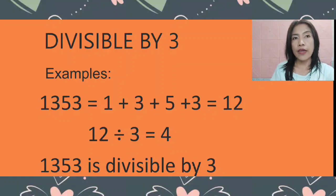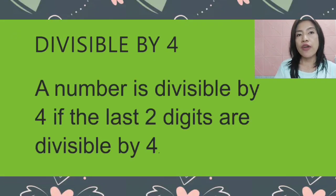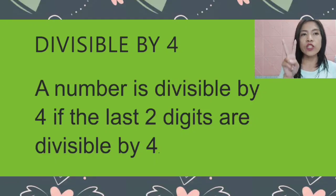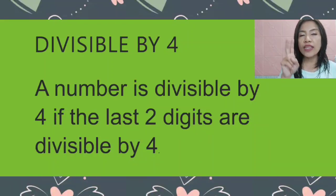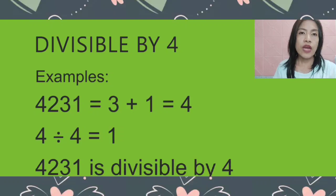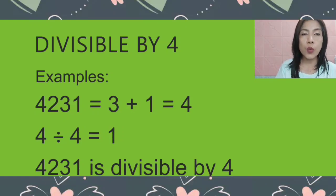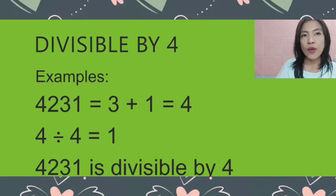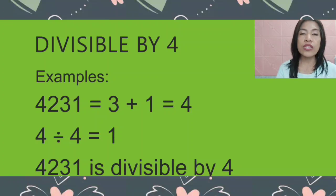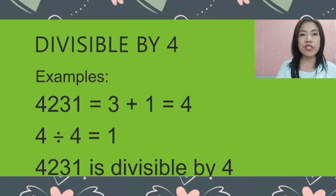Let's proceed to divisible by 4. A number is divisible by 4 if the last 2 digits are divisible by 4 — you add the last 2 digits and divide by 4. Example: we have 4,231. The last 2 digits are 3 and 1. So 3 plus 1 equals 4, and 4 divided by 4 equals 1. Therefore, 4,231 is divisible by 4.